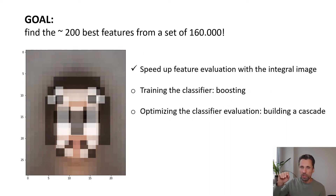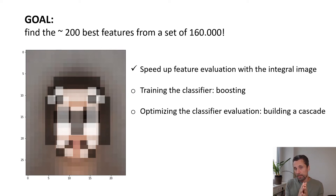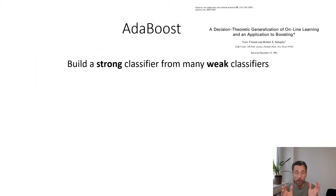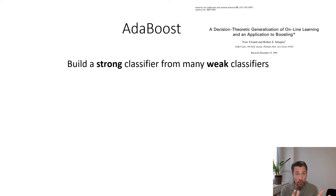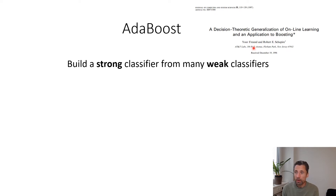In the end we will also optimize the evaluation of the classifier by building a so-called cascade. Let's have a look at how to build a strong classifier from many weak classifiers. Viola and Jones used an algorithm called AdaBoost — adaptive boosting — proposed about 25 years ago by Freund and Schapire.